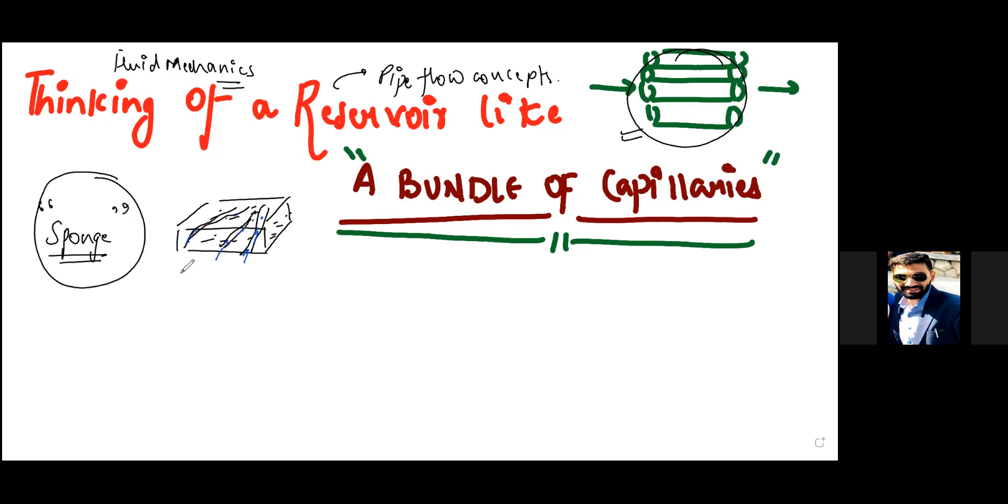Sponge is a bundle of capillaries. Similarly, all these capillaries together—there are infinitely many capillaries on micro scales—combine them together and that makes it a rock, a reservoir rock. Just imagine if this much of a rock sample has so many capillaries, imagine how many capillaries can be there in the entire subsurface or the entire reservoir.